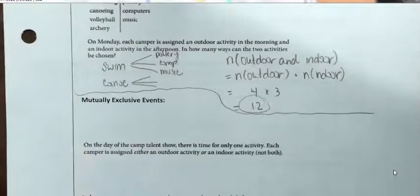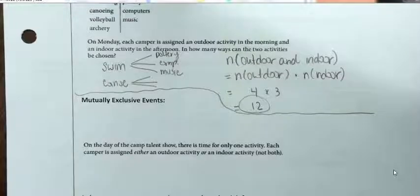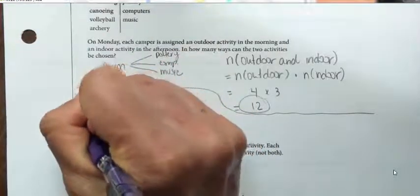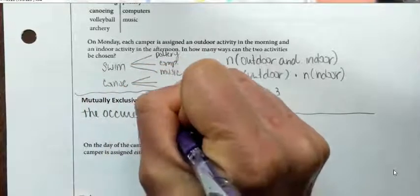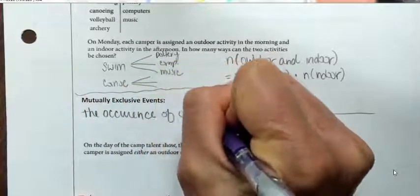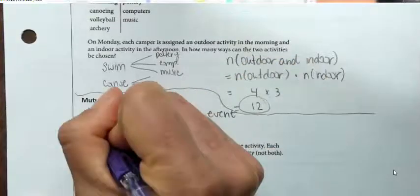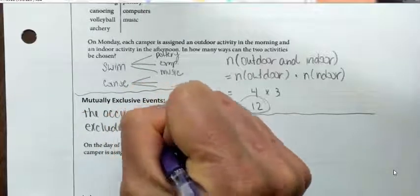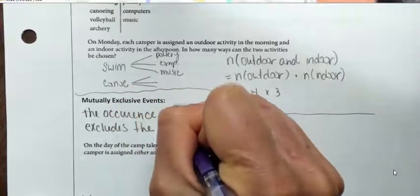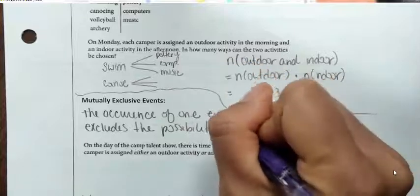Now let's talk about mutually exclusive events. This is where if one of the events occurs, it totally excludes the possibility that the other event will occur — the occurrence of one event excludes the possibility that the other will occur.